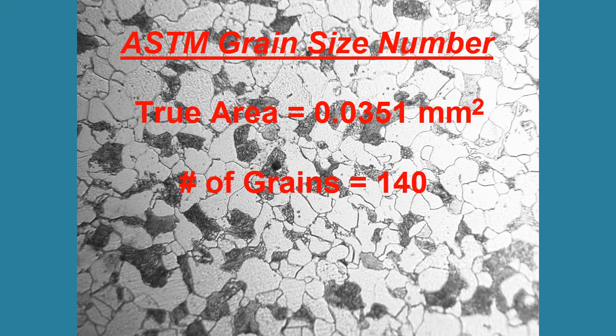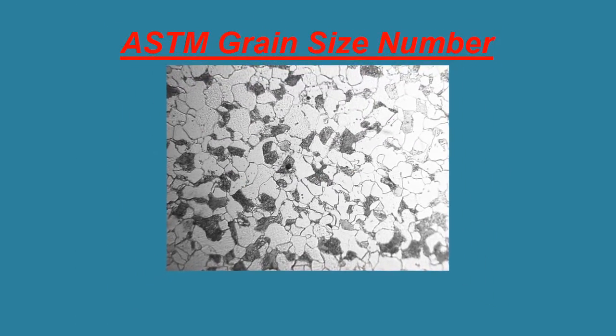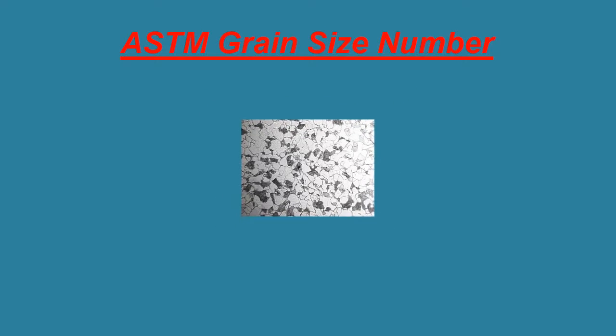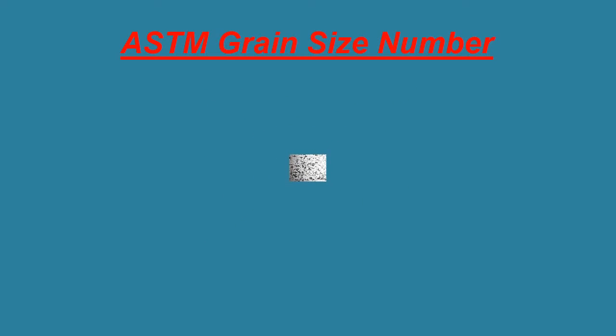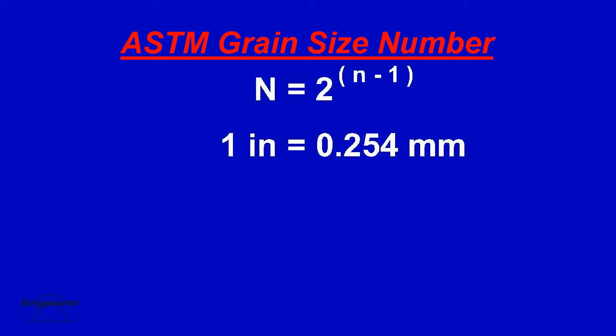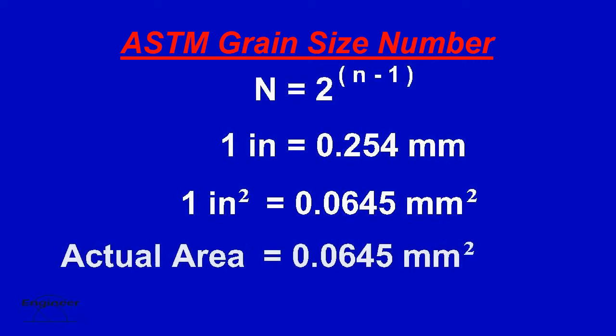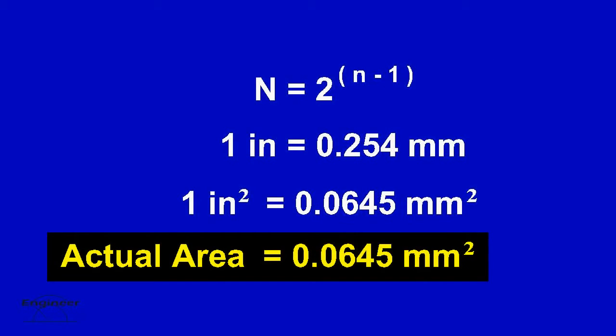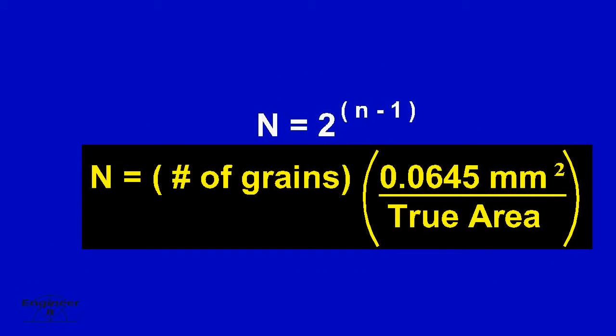We found that there are 140 grains in 0.0351 square millimeters. ASTM wants number of grains in one square inch area of a specimen photo at 100 magnification. So one inch on a 100 magnification photo is actually 0.254 millimeters on the specimen. And one square inch on a 100 magnification photo is actually 0.0645 square millimeters. Therefore, the actual area per ASTM is equal to 0.0645 square millimeters. We now have an equation with all the variables known and are able to solve for big N.